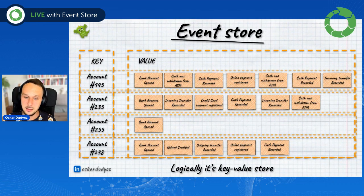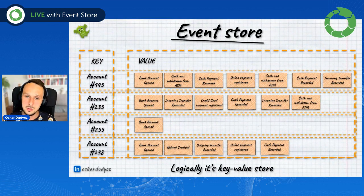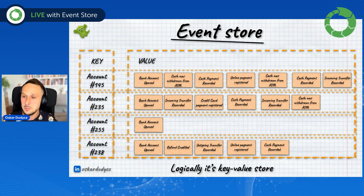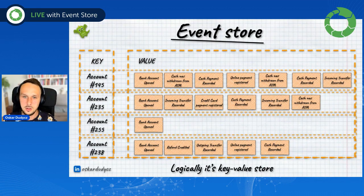Once we realize that, understanding how event stores and event sourcing work — and what the limitations and modeling techniques are — should be much easier. Is it an issue if we have a lot of events? Yes, it is, because we will be reading many events and they may keep a lot of data in total. But if our sequence of events is short and our events are granular, it shouldn't be a big deal — no bigger than joining records in relational tables or getting a document from MongoDB with a list of data. Same story.